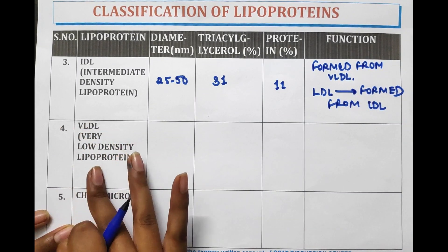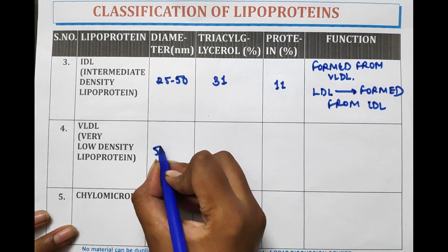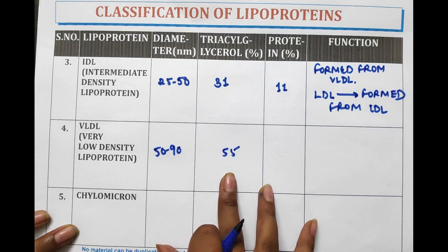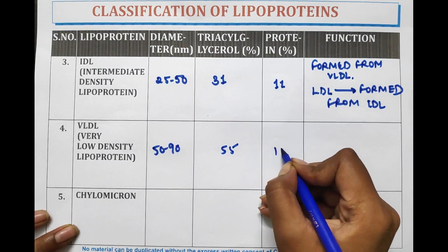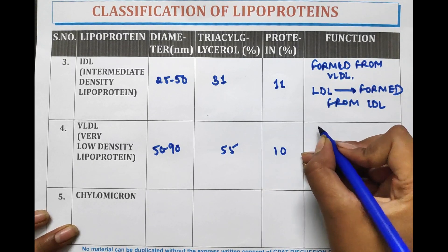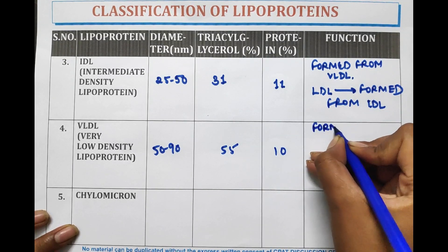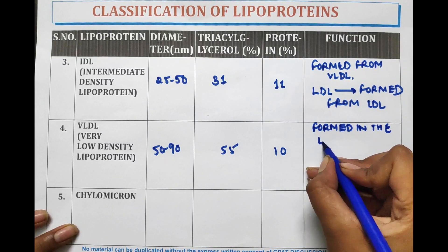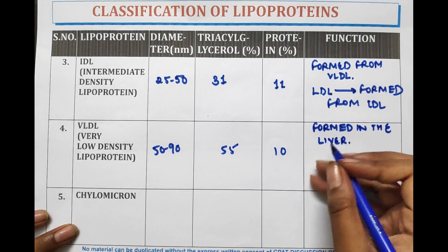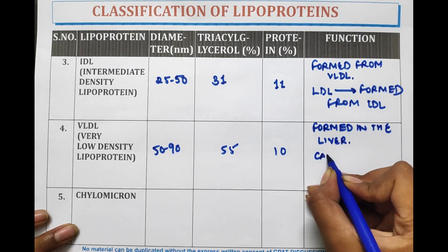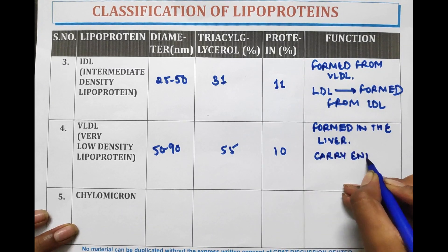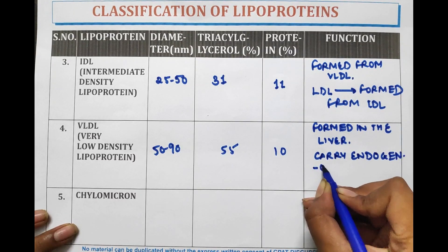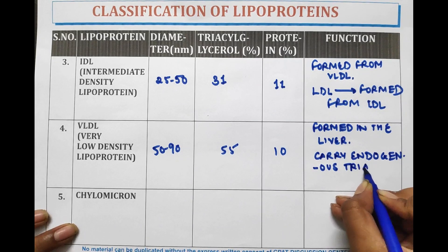VLDL — very low density lipoprotein — has a diameter of 50 to 90 nanometers and contains 55% triacylglycerol and 10% protein. It is formed in the liver, and it carries endogenous triacylglycerol.